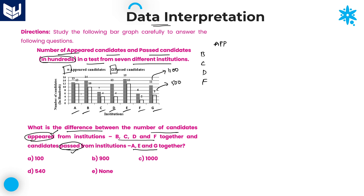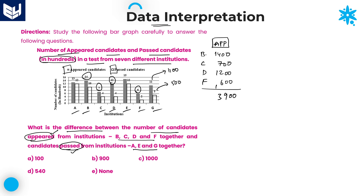Appeared candidates: B is 1400, C is 700, D is 1200, and F is 600. Adding all values: 14 + 7 + 12 + 6 = 39, so 3900. Total appeared candidates from institutions B, C, D, F together is 3900.